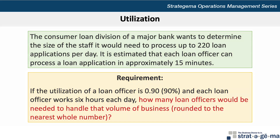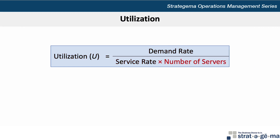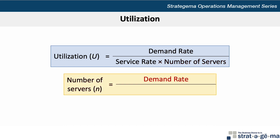We can solve this problem based on the utilization formula where U equals the demand rate divided by the service rate times the number of servers. We can modify this formula to solve for the number of servers N directly: N equals the demand rate divided by the service rate times the utilization rate U.